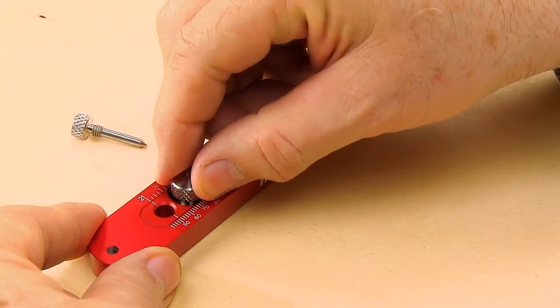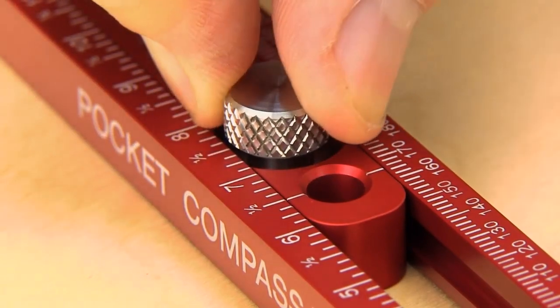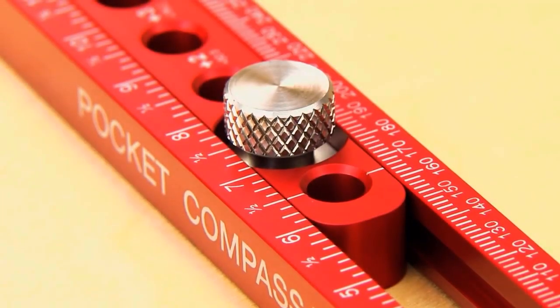Our compass uses a pair of precision machined telescoping body parts that lock to your desired dimension with a twist of a knurled head screw.